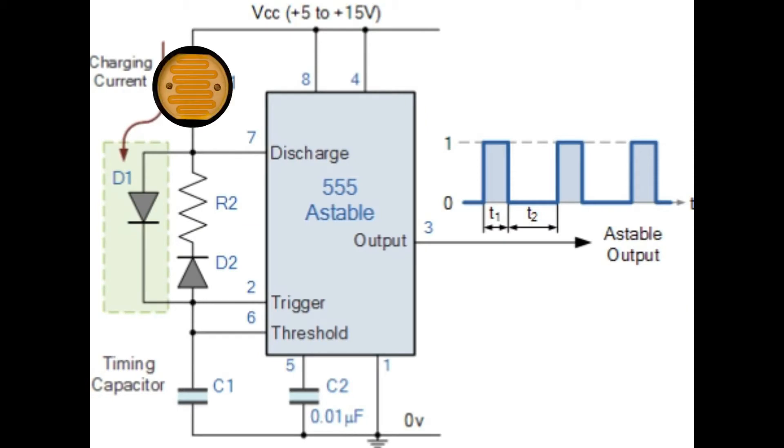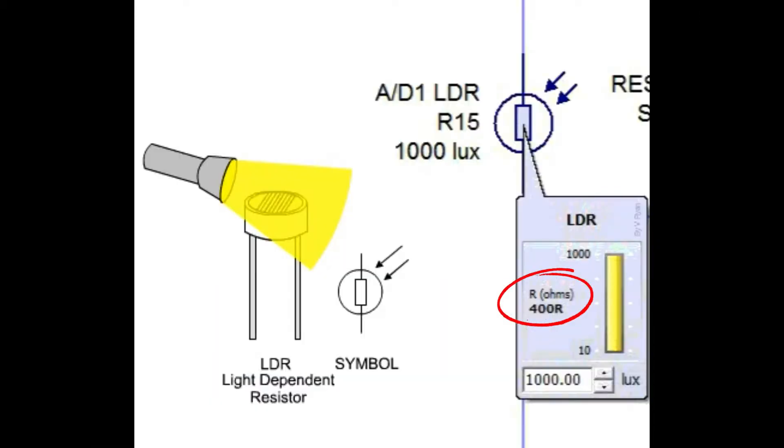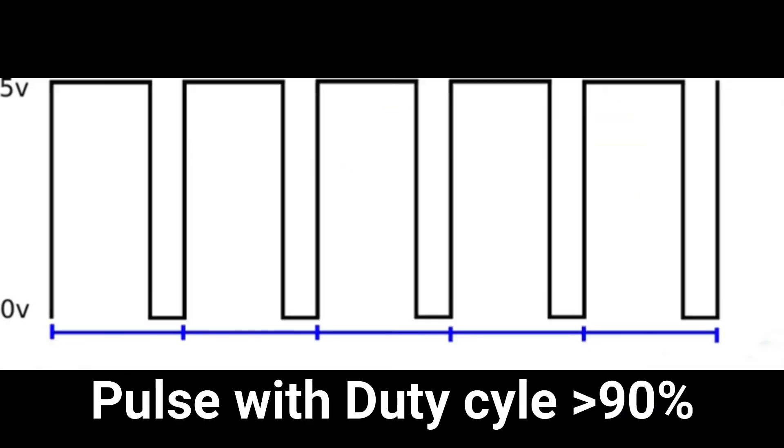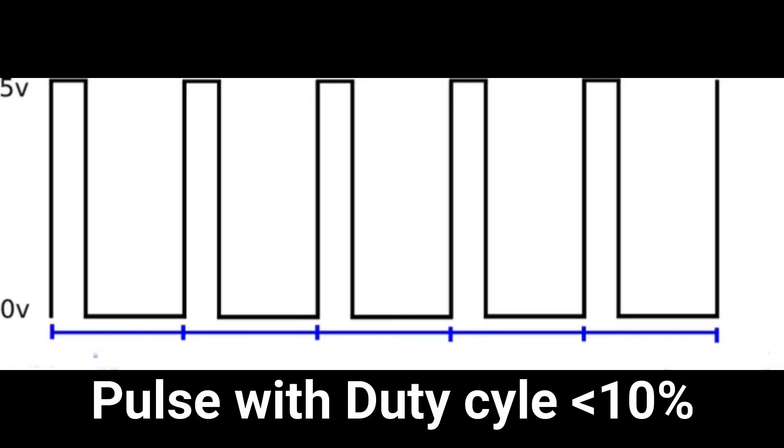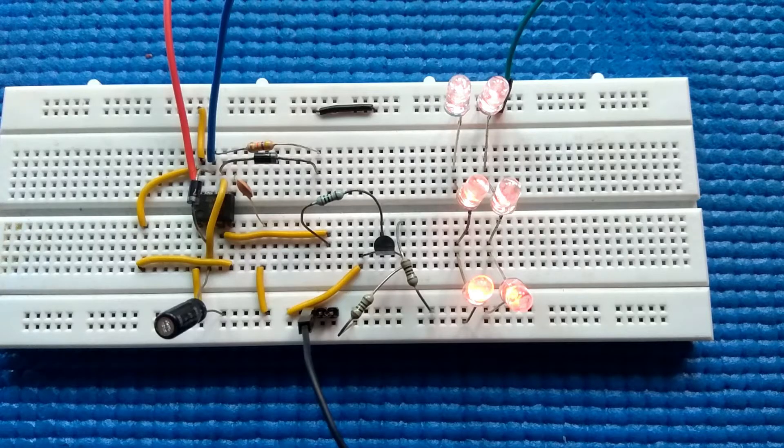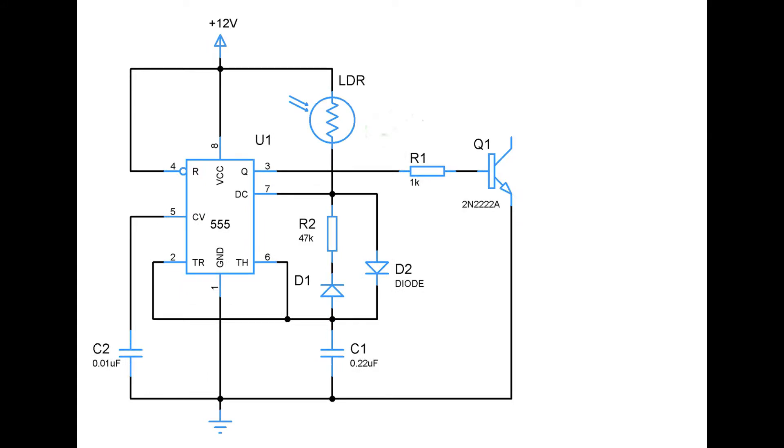Now to make this circuit light sensitive, replace the resistor R1 with a LDR. LDR will give out low resistance when high intensity light falls on it and exhibit high resistance when light is of less intense. So we can achieve high duty cycle which makes the LED to glow brighter and low duty cycle will make the LEDs dimmer.